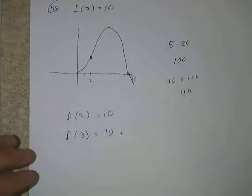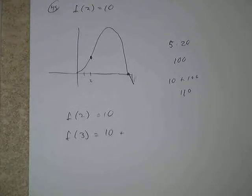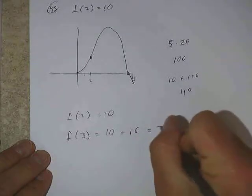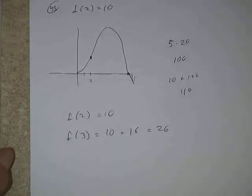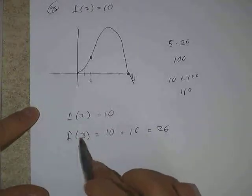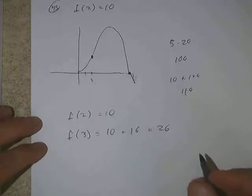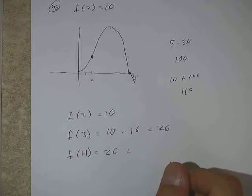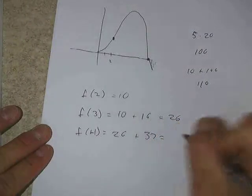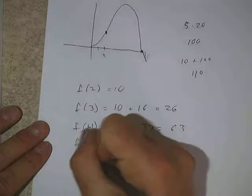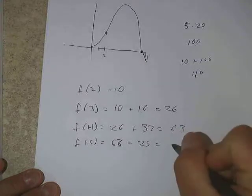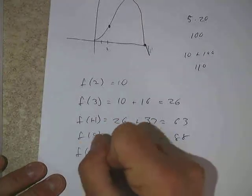Another method: use linear approximation. If f(2) = 10 and the derivative at 2 is about 16, then f(3) ≈ 10 + 16 = 26. To estimate f(4), we use f(3) = 26 plus the derivative at 3. The derivative at 4 looks like about 37 — though we should double-check that.